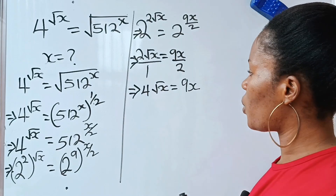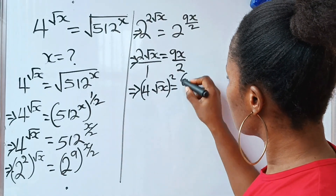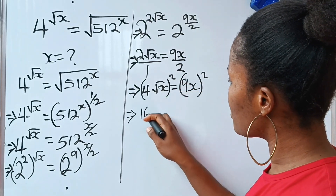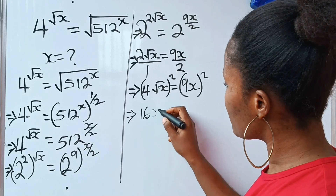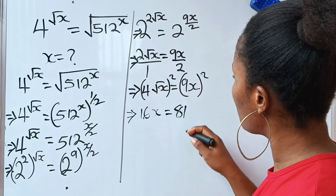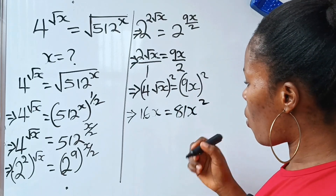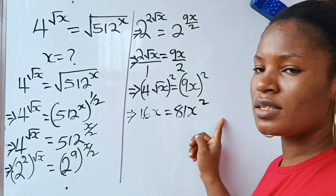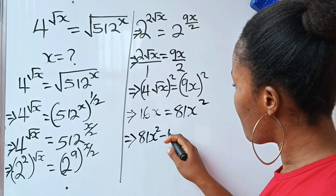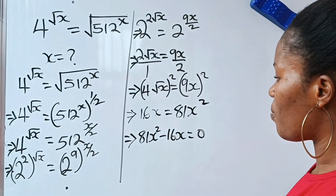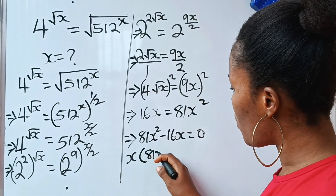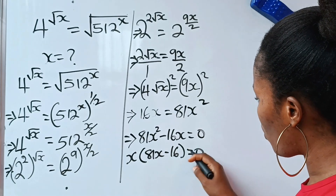Let's square both sides of this equation. Squaring this side, 4 squared gives us 16, and root x squared gives us x. On the right side, 9 squared is 81, giving us 81x squared. Transferring 16x to the other side, we have 81x squared minus 16x equals 0. Let's factorize: x bracket 81x minus 16 equals 0.